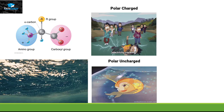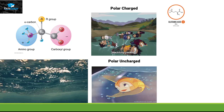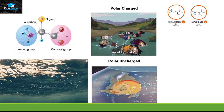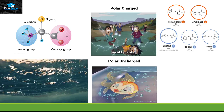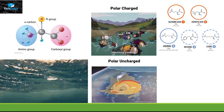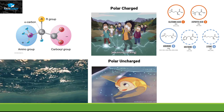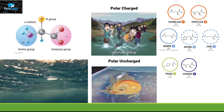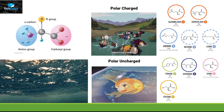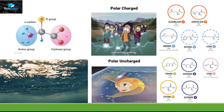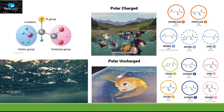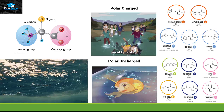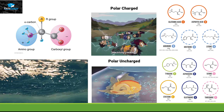The polar charged amino acid category consists of glutamic acid and aspartic acid as acidic amino acids, and arginine, histidine, and lysine as basic amino acids. In polar uncharged amino acids we have tyrosine, asparagine, serine, cysteine, glutamine, and threonine. We are going to remember the structures of these amino acids in this video.